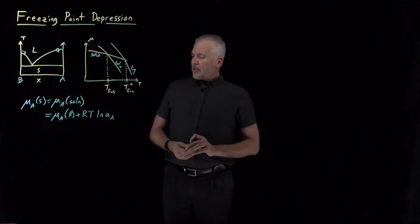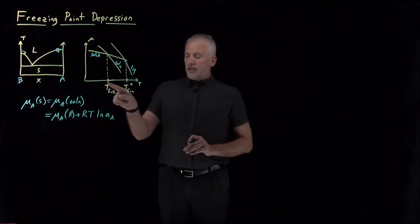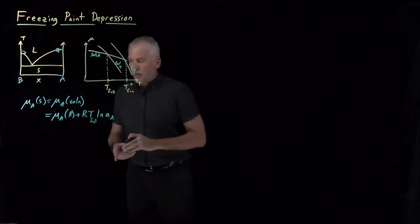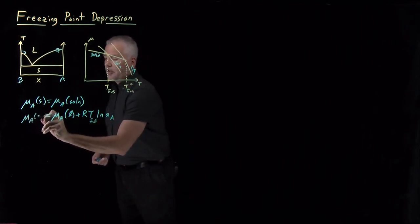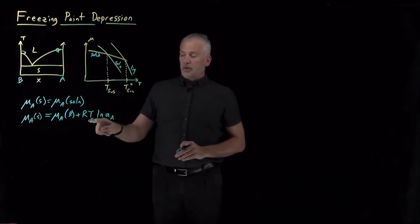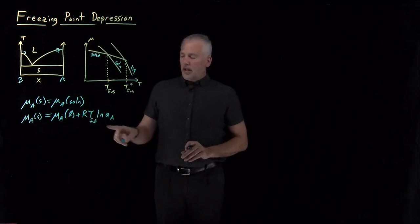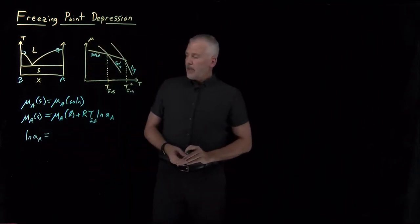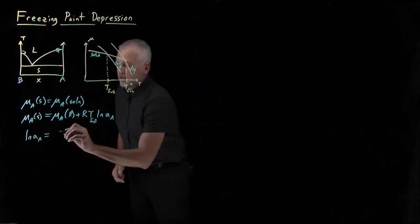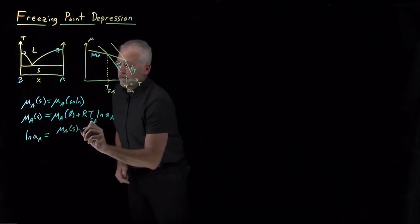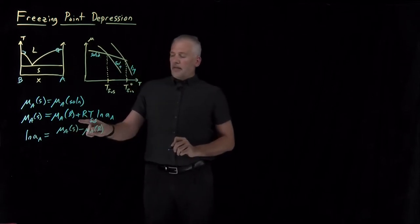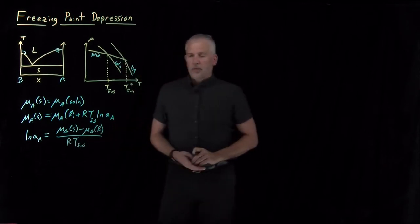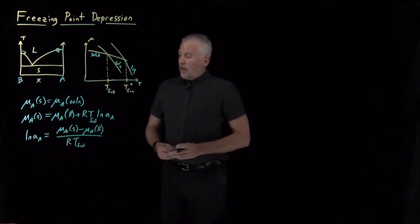So we have this expression. Since our goal is to understand something about how the activity relates to this temperature change, let's rearrange and isolate the activity. This temperature at which the chemical potential of the solid is equal to that of the solution is the melting point — the temperature at which this solid and solution are in equilibrium with each other. Rearranging to solve for the log of the activity: chemical potential of solid minus that of the liquid gives RT·log(A), so dividing by RT leaves us with log of activity.